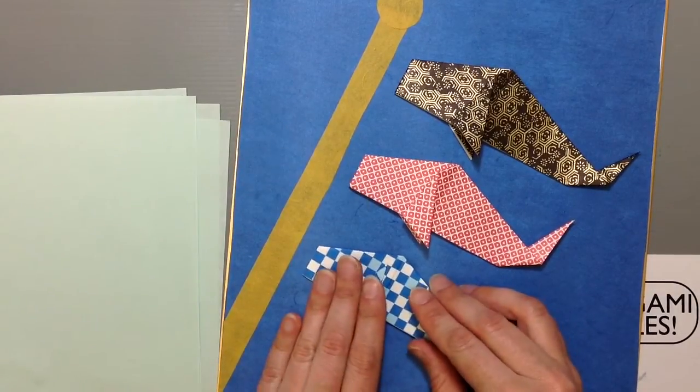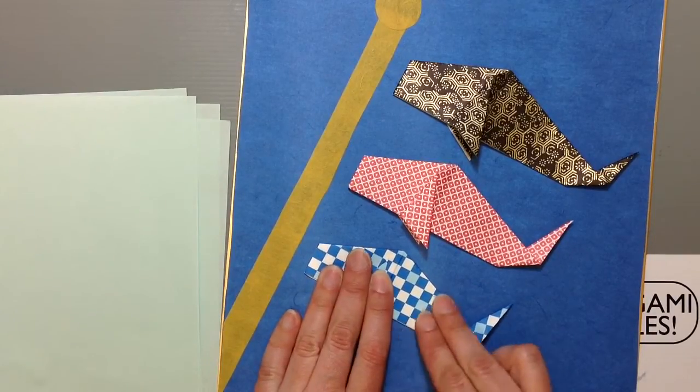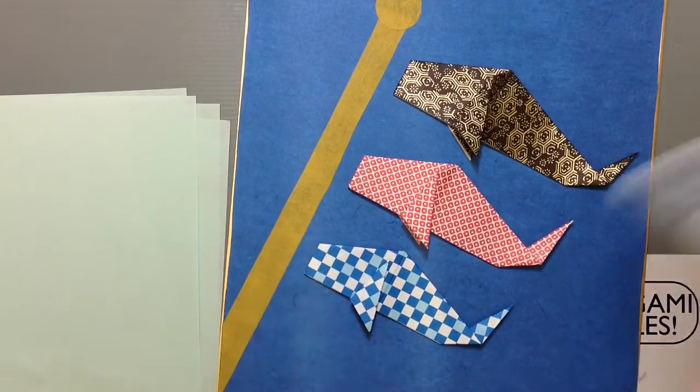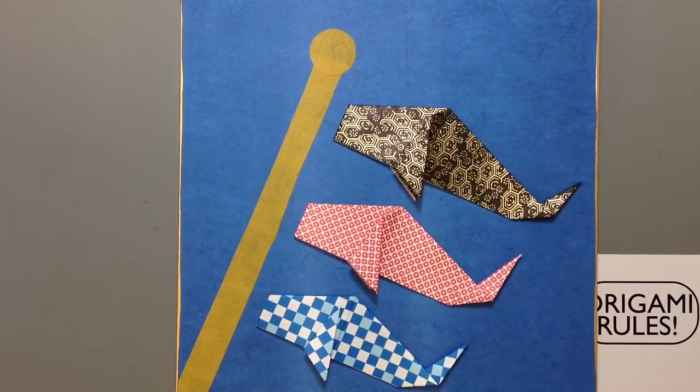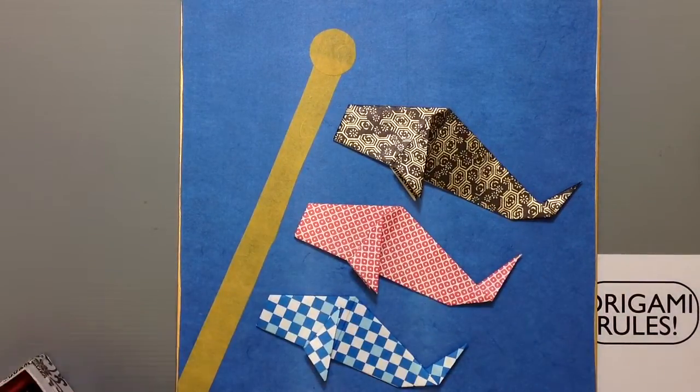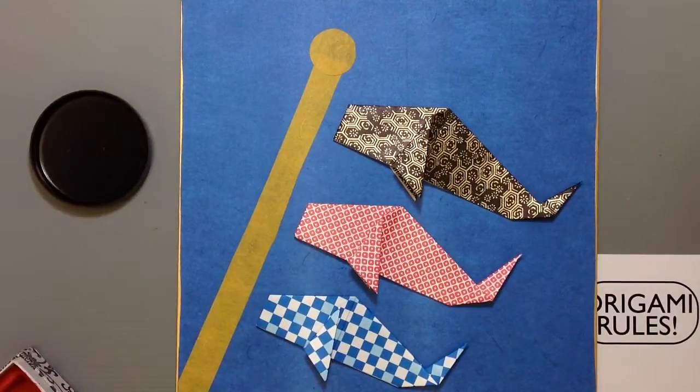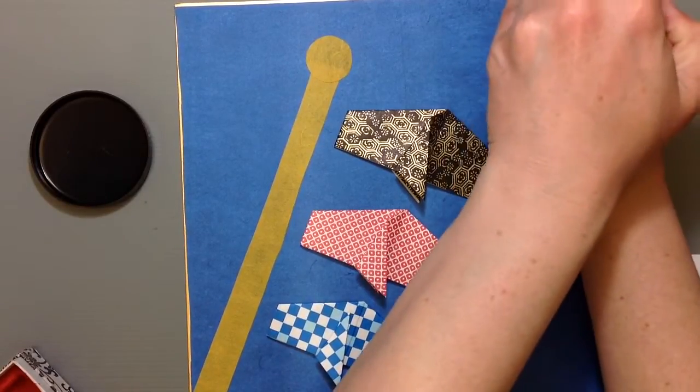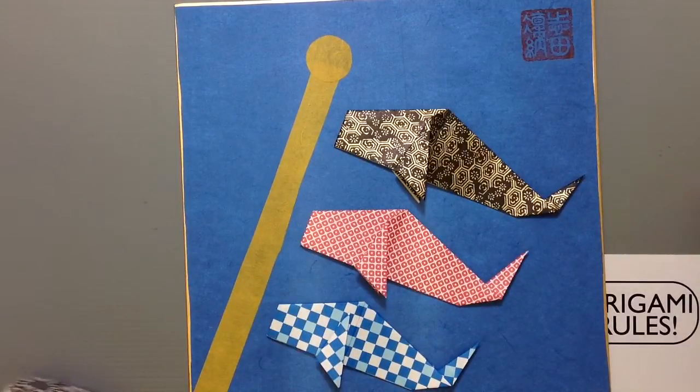But in the end you should get something that kind of looks like this. A nice little family here. And then if you wanted to, if you have like a sign or something that you use. I've got my little stamp or thingy here. I can put my name on. But that should give you sort of a finished kind of fun way to display the traditional koi.